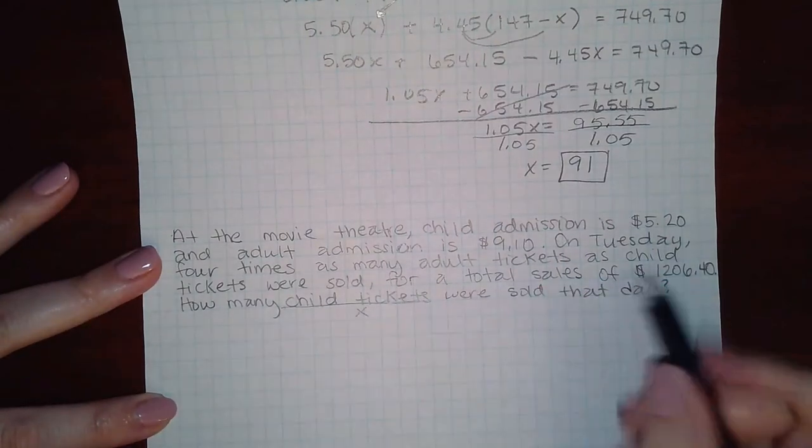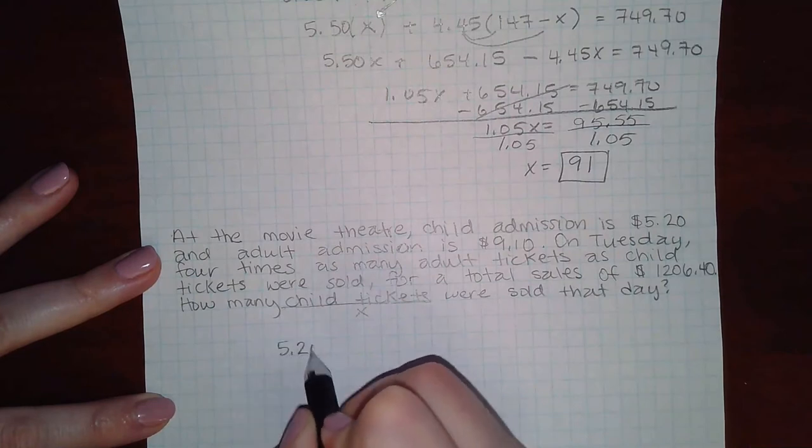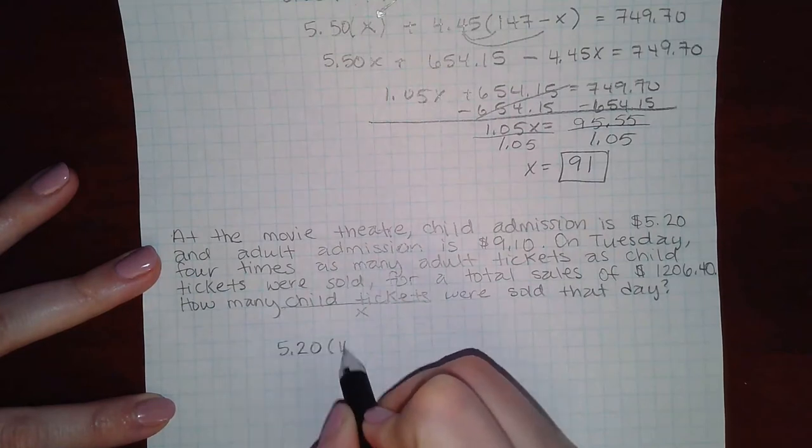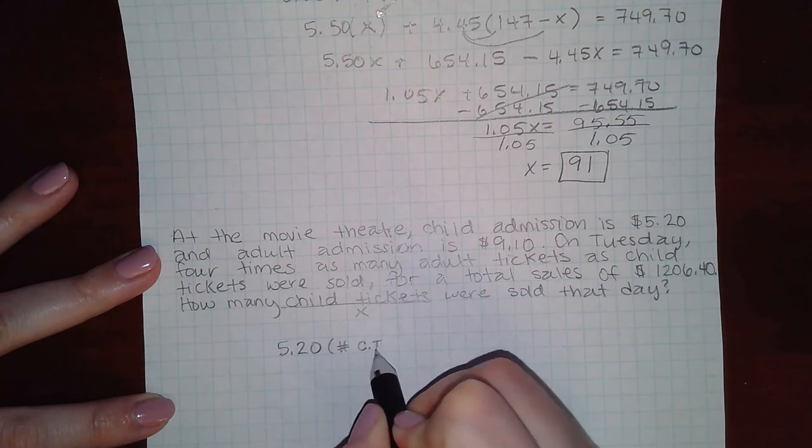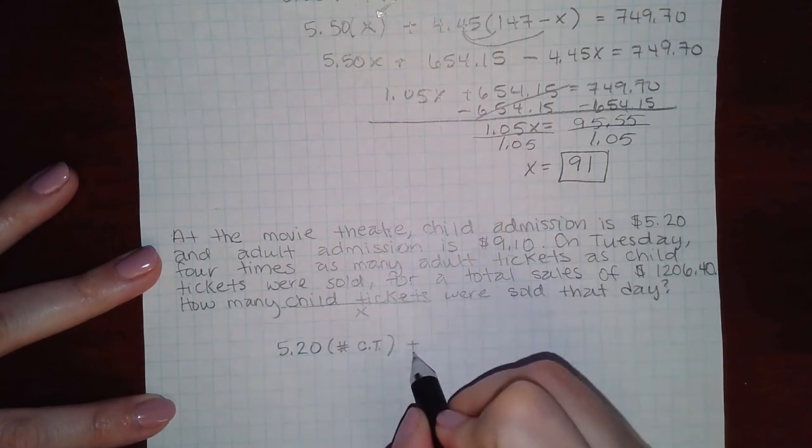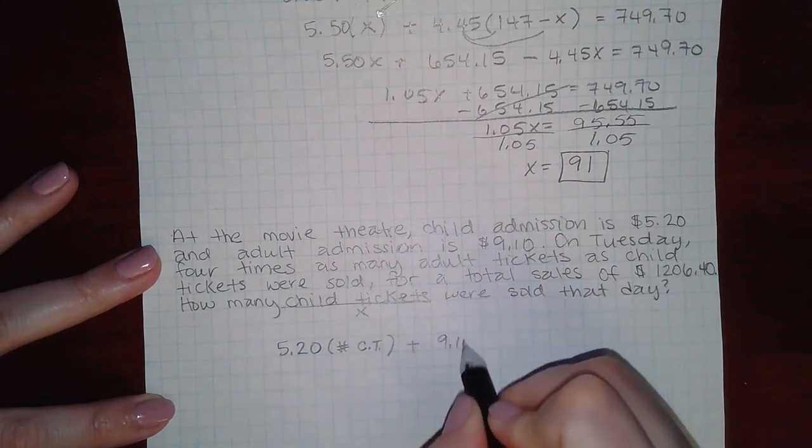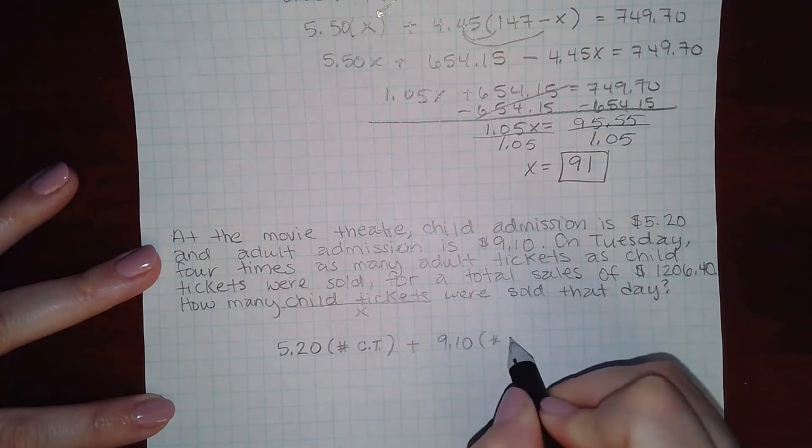But let's set up the equation considering the total sales. So in order for me to find the total sales, I would have to have $5.20 times the number of child tickets, plus $9.10 times the number of adult tickets.